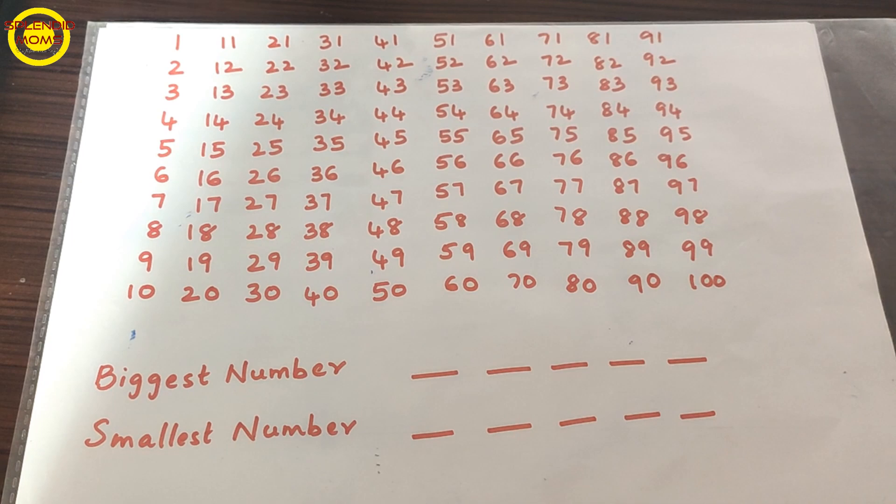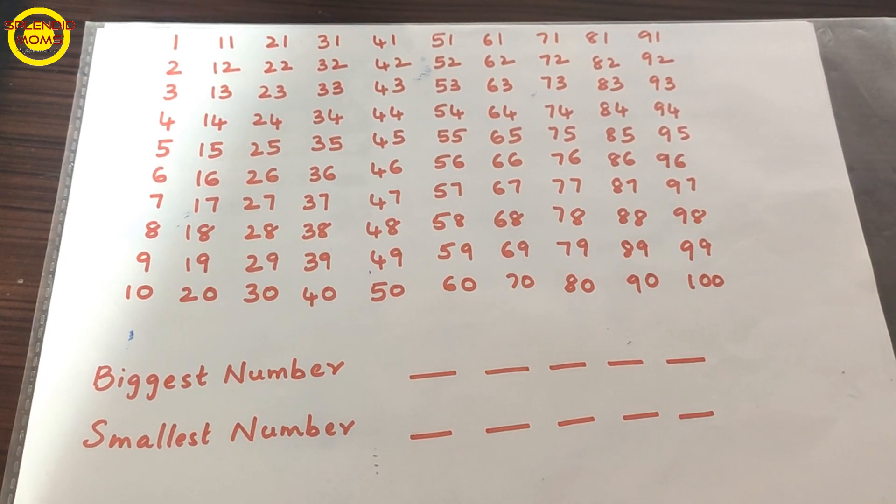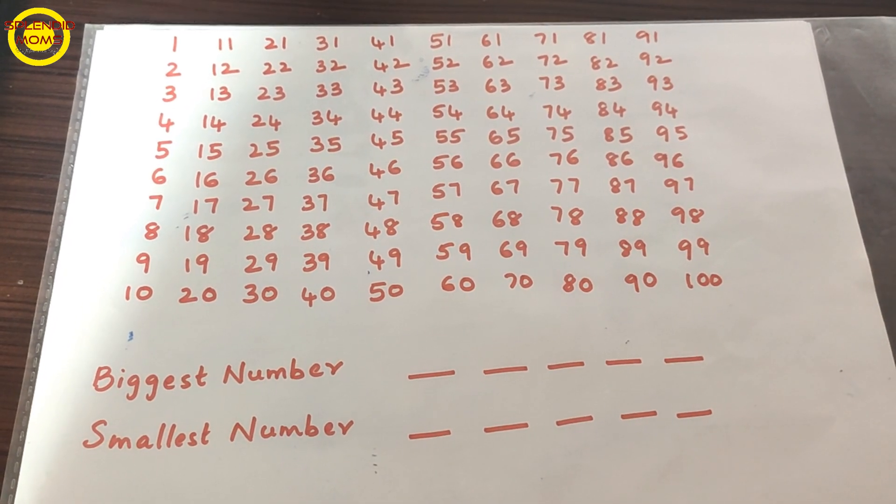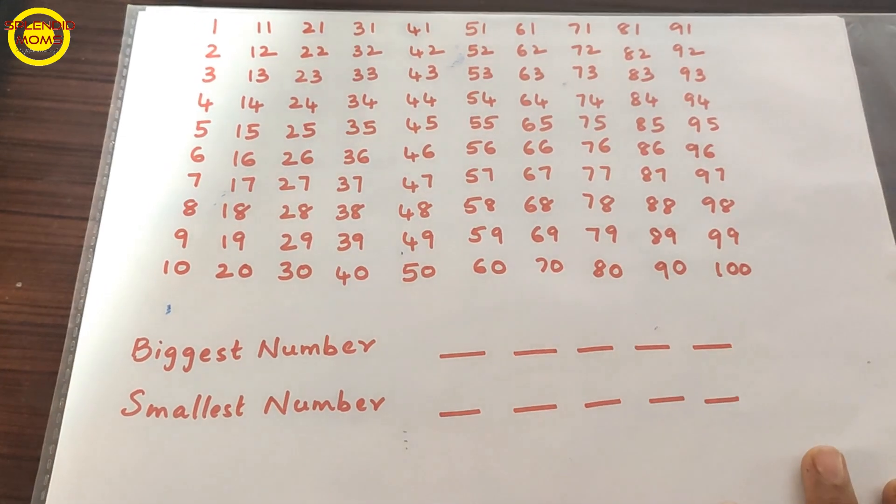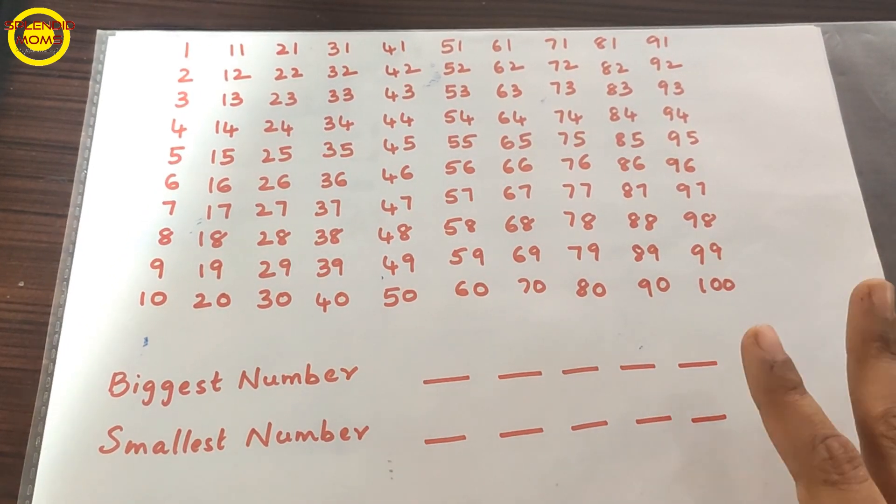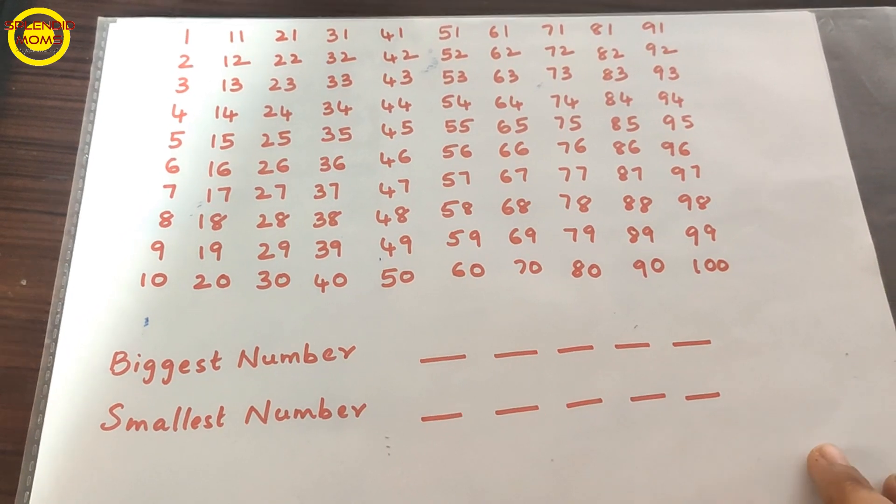When you compare 4 or 5 numbers, kids are very confused. We cannot tell the quantities because numbers are very big, so with the help of the chart you can do it. Let's see how we can do it now.